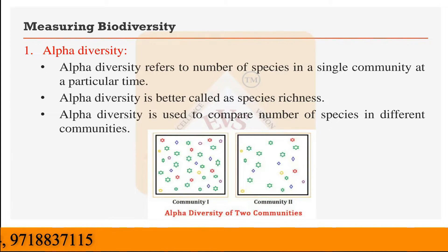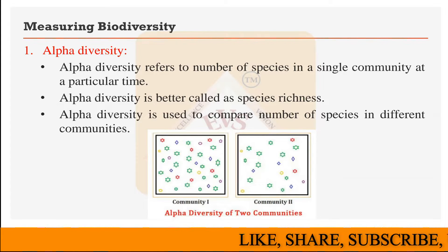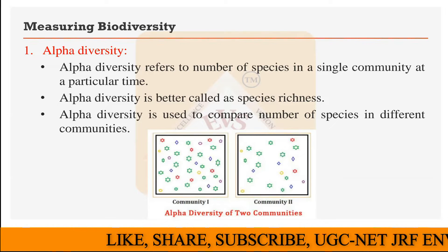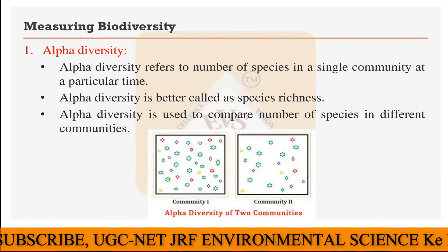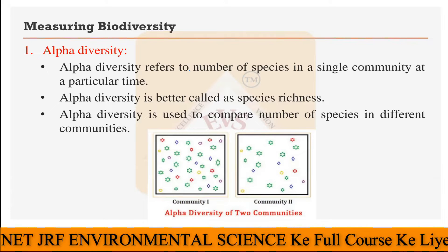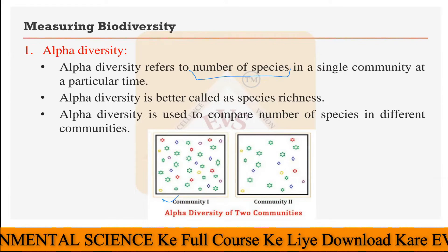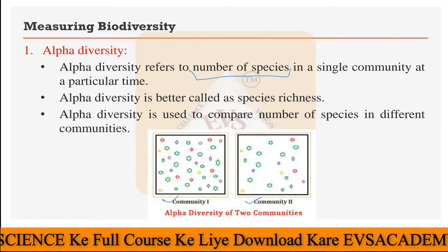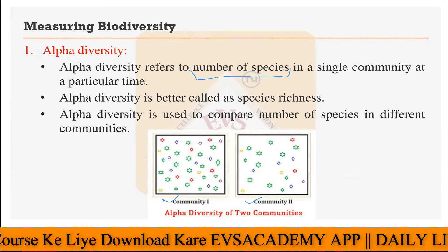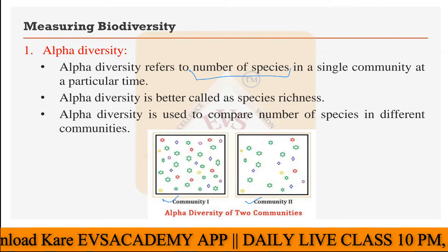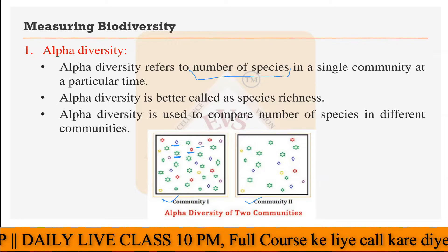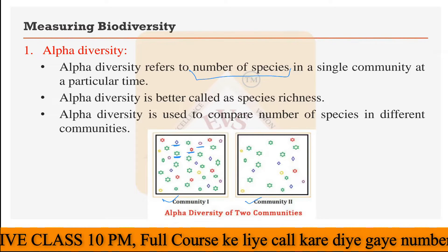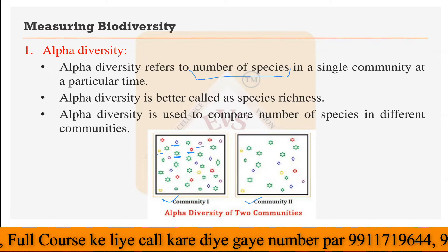Alpha diversity means it refers to the number of species in a single community at a particular time. How many species you can find in a particular community in a per unit area — that can be your alpha kind of biodiversity. For example, here you can see two images of community one and community two of the same area. At a particular time, here you can see there are multiple types of species — five types of different species you can find out here.